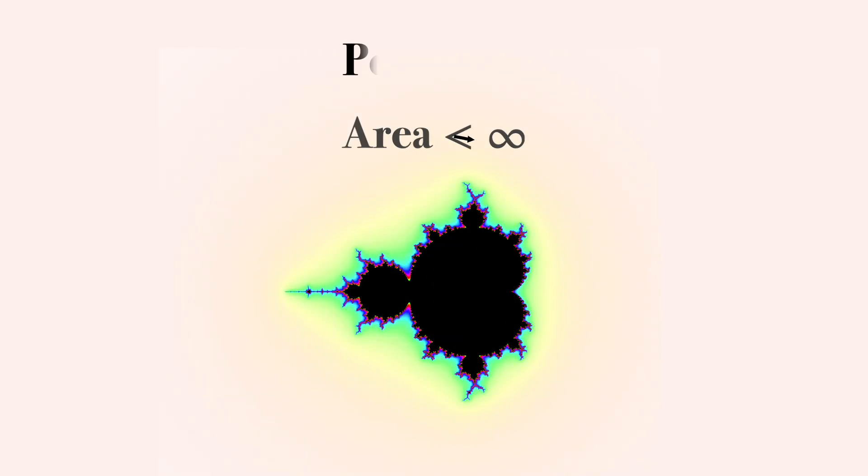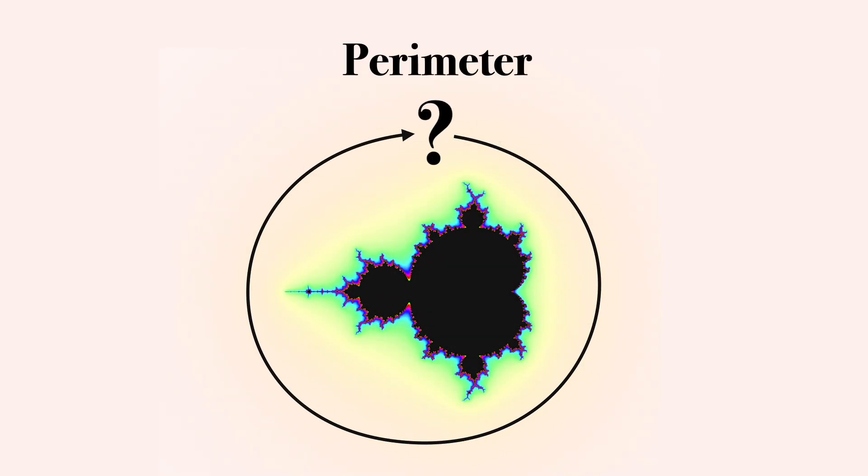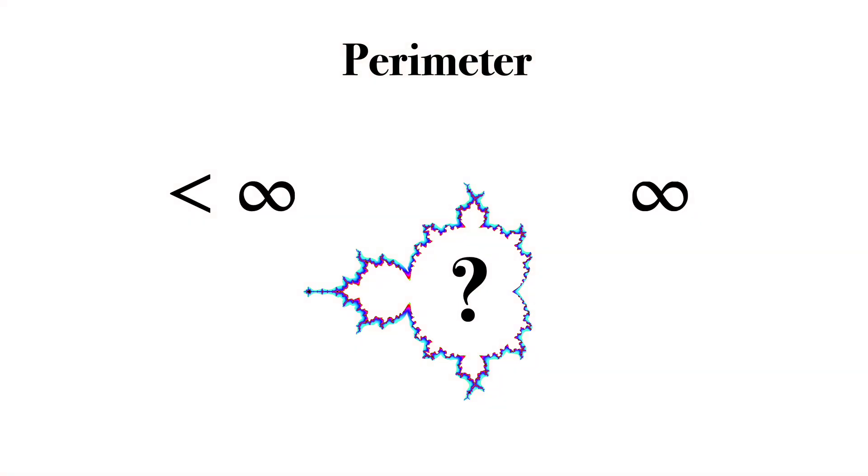The area of the Mandelbrot set is finite, but what about its perimeter? Is it finite or infinite? I'll prove the answer to you in less than three minutes.